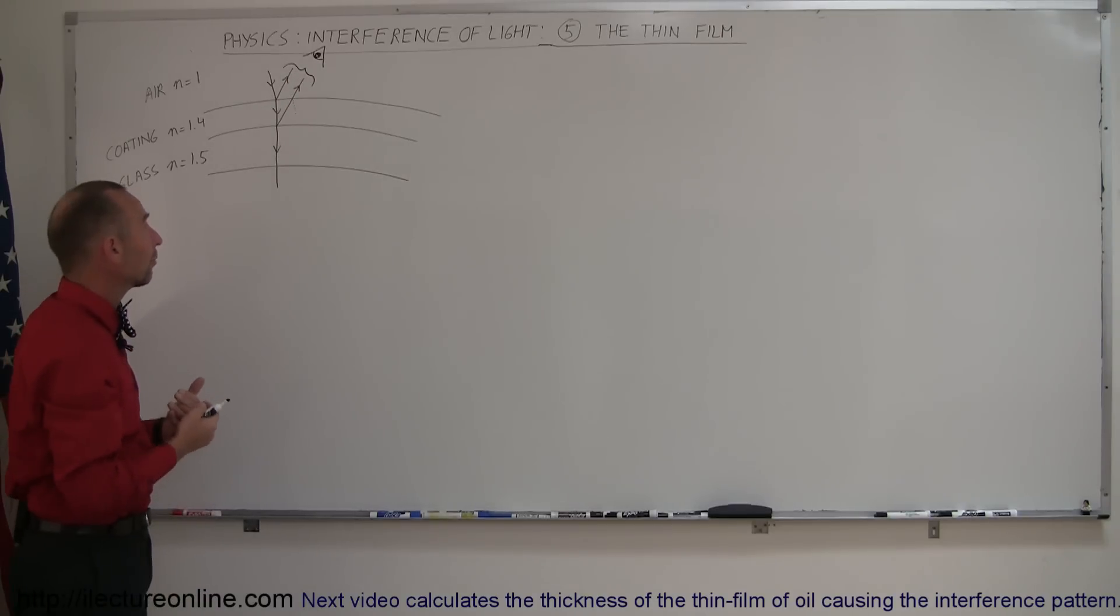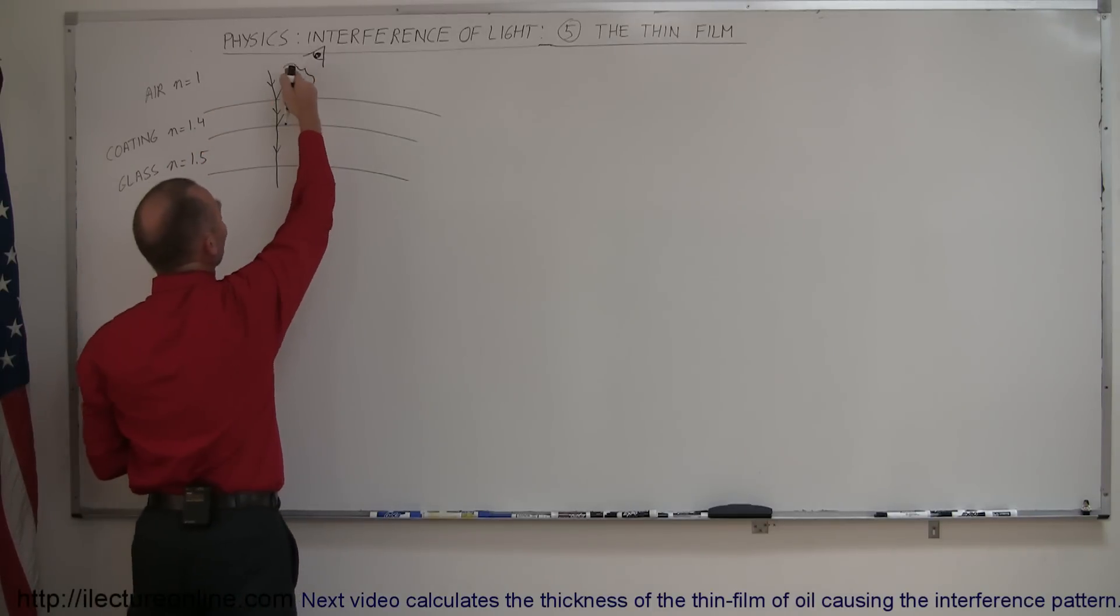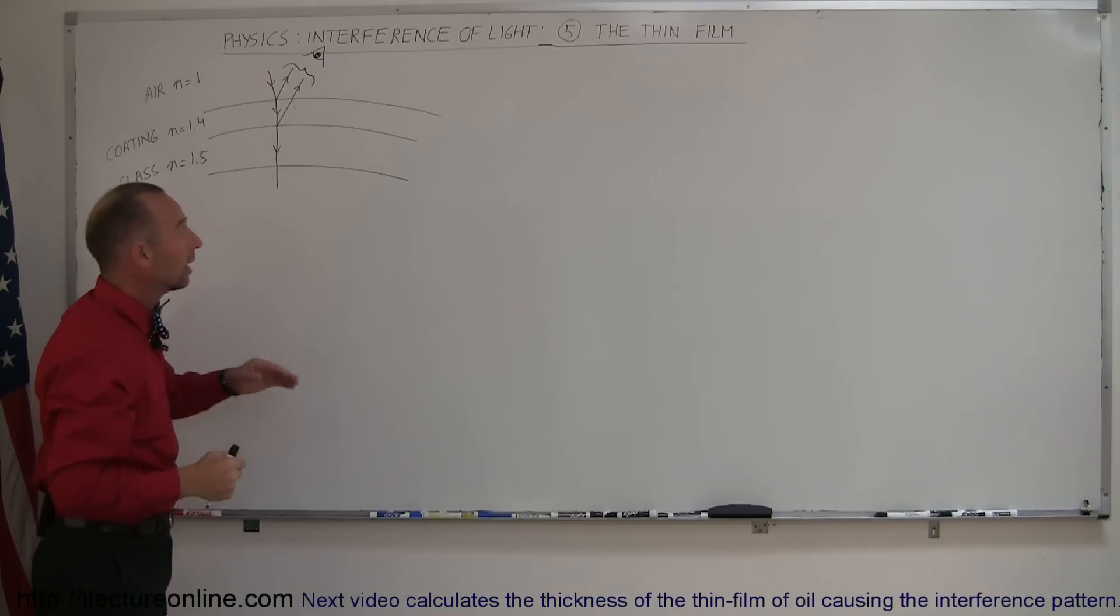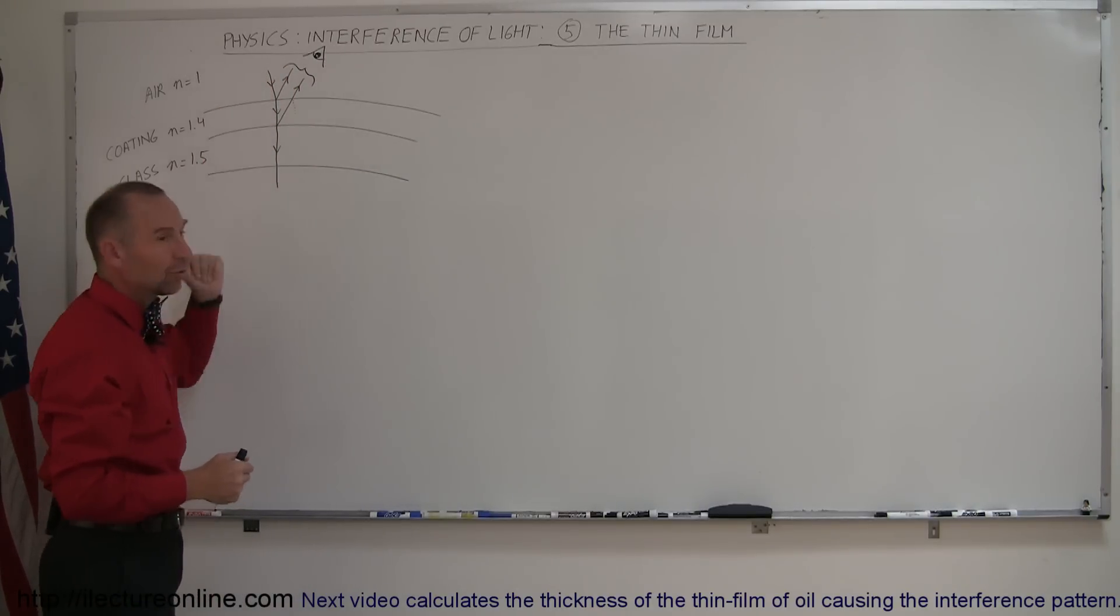So you could actually see zero light being reflected because of destructive interference, which means then that the light will be completely transmitted. So if no light is reflected, all the light is transmitted. If light is reflected, then that particular wavelength of light is not being transmitted.